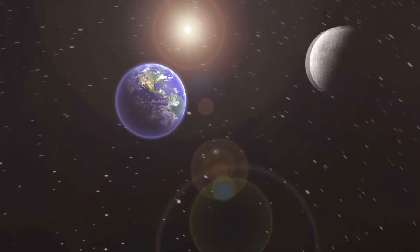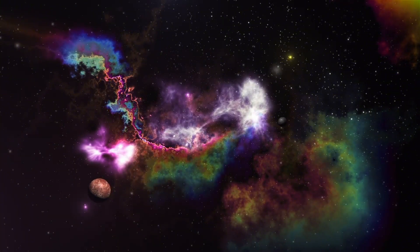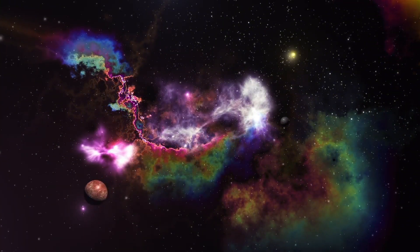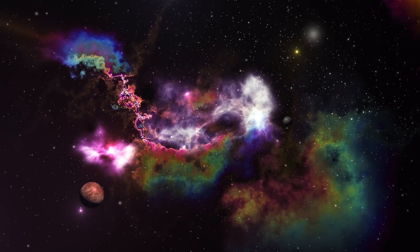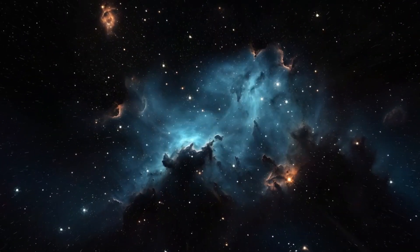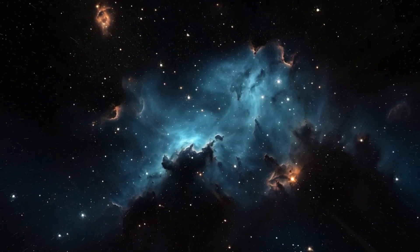The sun's interior is divided into several layers, with the core at the center, enclosed by the radiative zone and the convective zone. The core is the sun's most significant region, where nuclear fusion occurs, converting hydrogen into helium and producing immense amounts of energy.